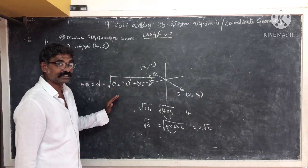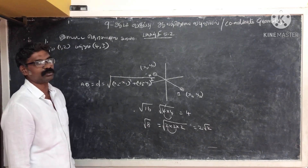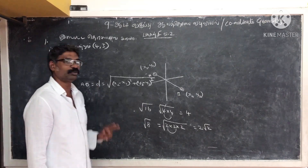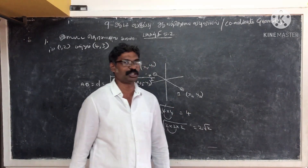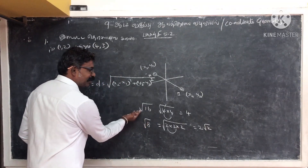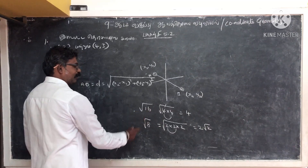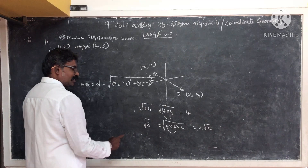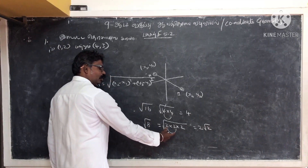You will use this at the 10th standard because you can use these two parts. The whole square is (x2 minus x1) the whole square plus (y2 minus y1) the whole square. We can do many sums. In this concept, the square root of 16 is a perfect square number. For example, the square root of 1 — that is the same.